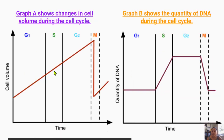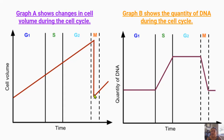Graph A shows the changes in cell volume over the cell cycle. Through the three phases of the interphase — G1, S, and G2 — volume increases. When the cell undergoes mitosis, the cell volume drops back to its original size, resulting in the daughter cell being smaller and having an increased surface area to volume ratio. The quantity of DNA also changes throughout the cell cycle. A cell entering G1 has one copy of the full genome, but during the S phase DNA gets replicated to create two copies. By G2 the DNA quantity has doubled. Then when the cell divides during the M phase, the quantity of DNA halves again back to what it was in G1, and the cycle begins again.